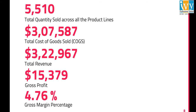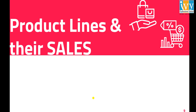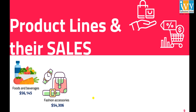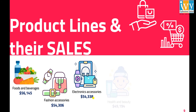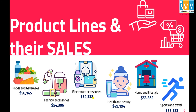Now let us see what product lines the superstore offers. We have Foods and Beverages, Fashion Accessories, Electronic Accessories, Health and Beauty, Home and Lifestyle, and Sports and Travel. Among them, Food and Beverages gives us the highest revenue.